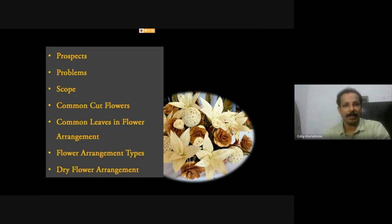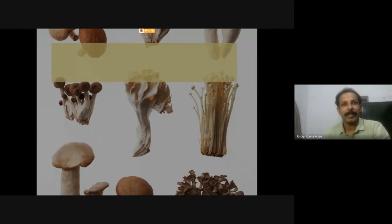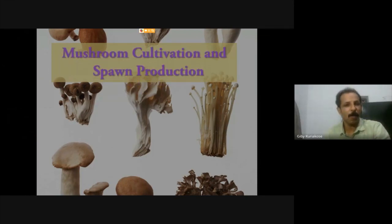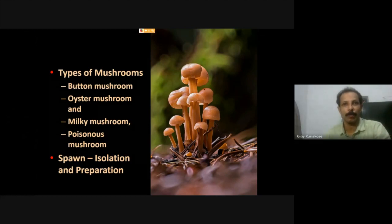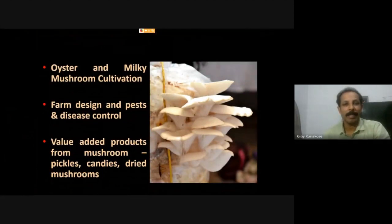Another interesting field is mushroom cultivation and spawn production. Spawn is essentially the seed used for mushroom cultivation. It includes different types of mushrooms — button mushroom, oyster mushroom, milky mushroom, and poisonous mushrooms. Knowing the poisonous varieties is essential before undertaking cultivation. The course also covers isolation and preparation of spawns, and oyster and milky mushroom cultivation practices in detail.